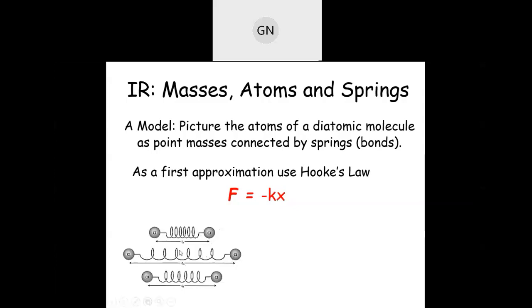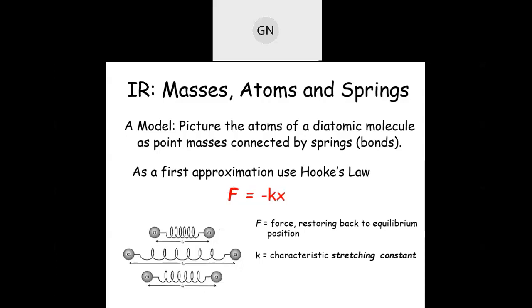The restoring force is proportional to the displacement of the point charges from the equilibrium position, but always acts in the opposite direction — hence F is proportional to −x. Removing the proportionality and introducing the spring constant (or force constant): F = −kx. This is also called the stretching constant.